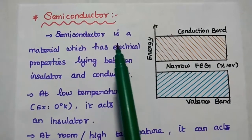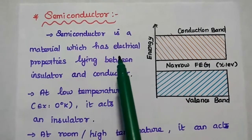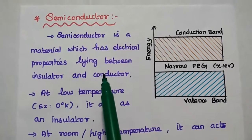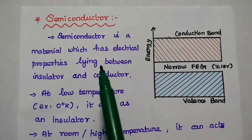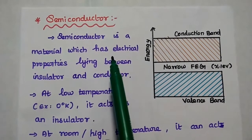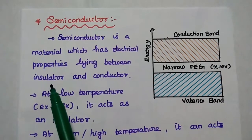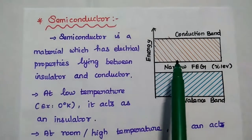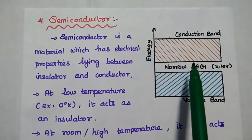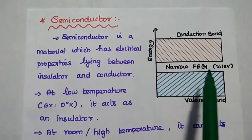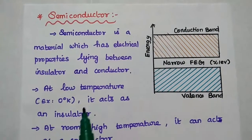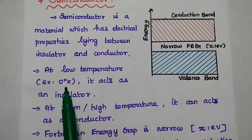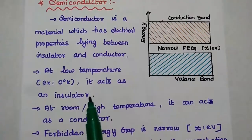Semiconductor is a material or substance which has electrical properties lying between insulator and conductor. Its conductivity lies between that of an insulator and a conductor. It has a very small, narrow forbidden energy gap. At low temperature, for example 0 degrees Kelvin, it acts as an insulator.